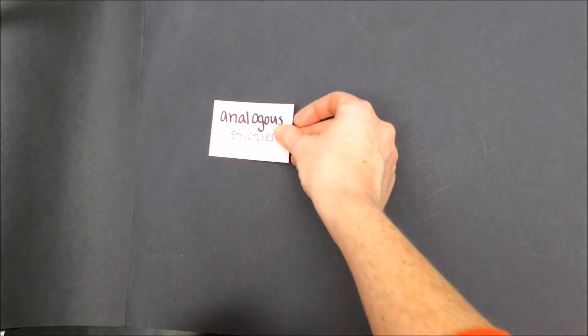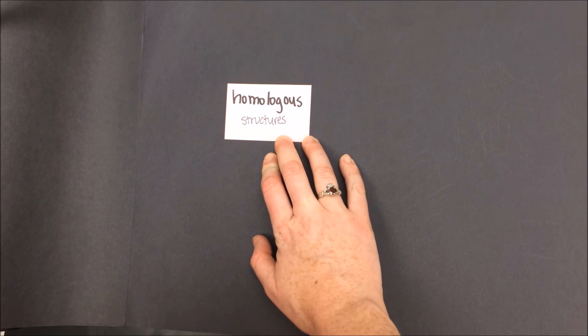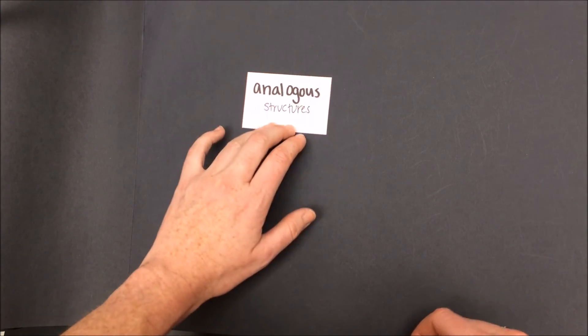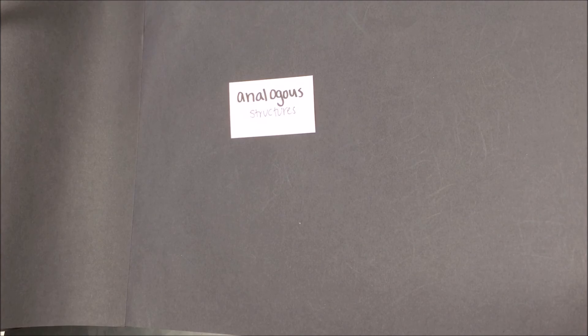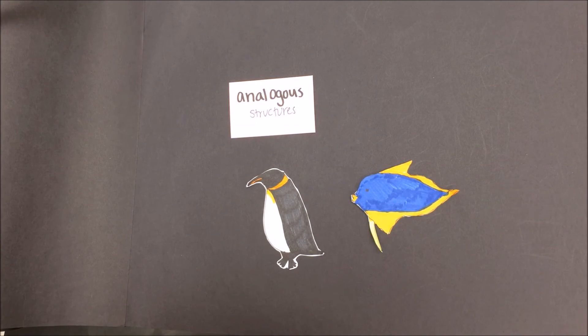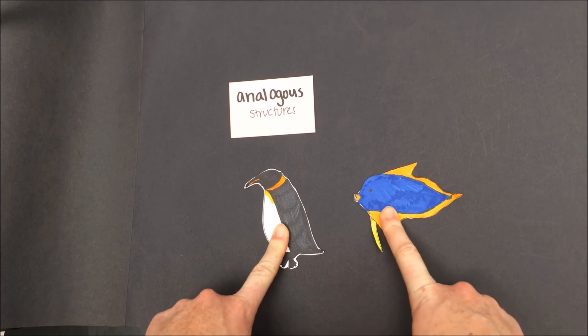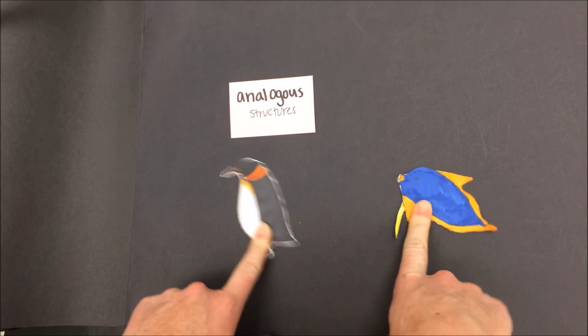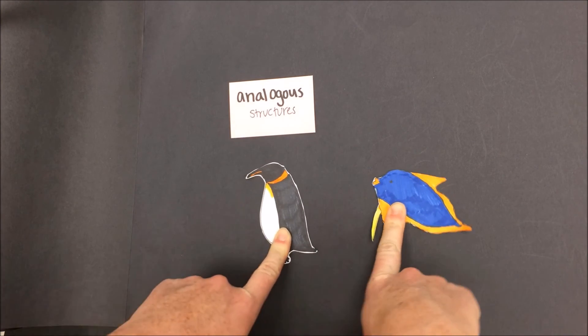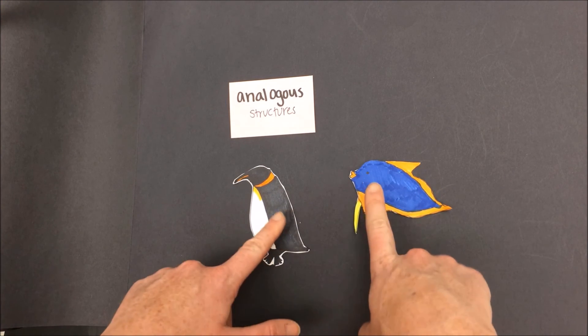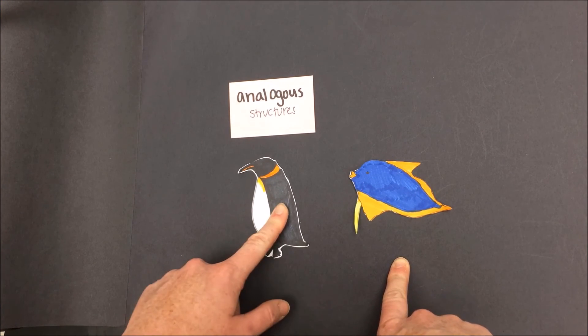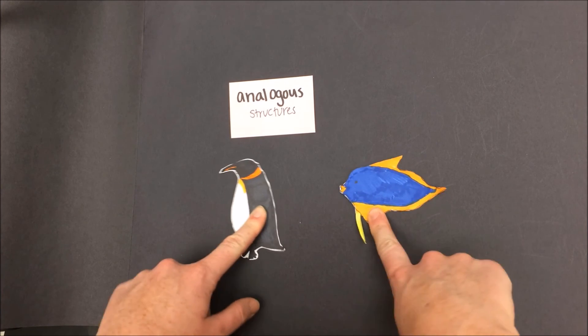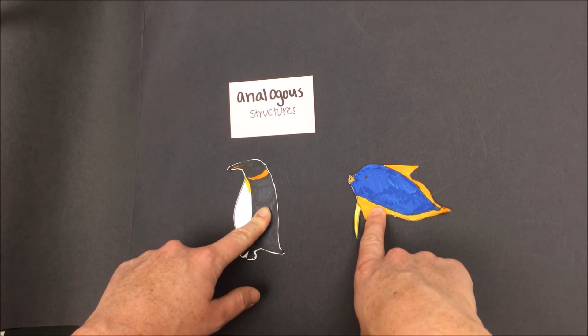Another misconception is that analogous structures are the same thing as homologous structures. We said that homologous structures are similar in form but different in function. Analogous structures are much more closely related in function. For example, both fish and penguins swim. However, they are only distantly related if we look at evolutionary history. Penguins are birds and this fish is a fish. Although they both spend most of their life in the water and swim as their primary means of transportation, they are not as closely related. The flipper-like wings of the penguin and the fins of an angelfish are similar in purpose but different in evolutionary history.